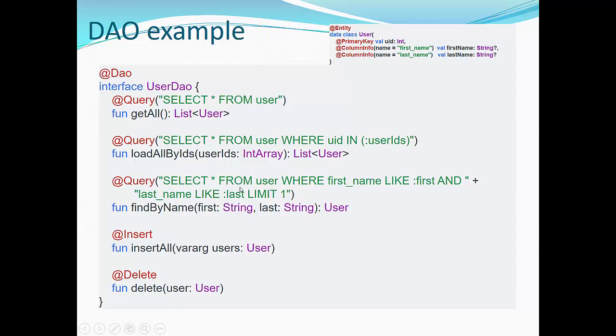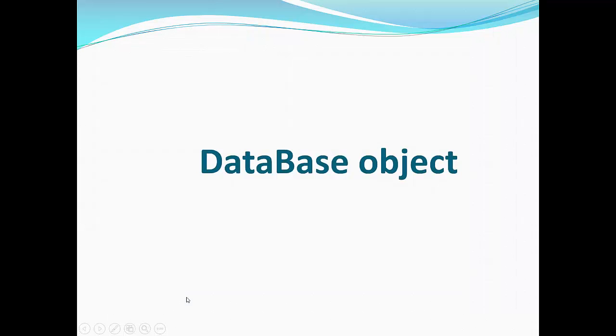The next query: select everything from the table where first name like first name and last name like the pattern and limit one. So in this case, limit one means only one user will be returned. findByName will be accepting two strings like first name and last name. Insert method and delete method are pretty straightforward. In this case, we see that we provide mapping function insertAll that inserts a variable of type user, and function delete will be deleting user by this particular name.